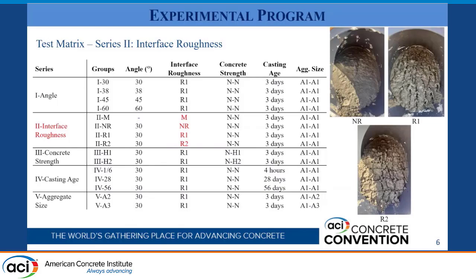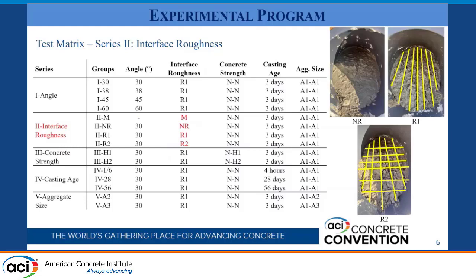For the second series, we investigate different levels of interface roughness. For group M, specimens are cast monolithically with no cold joint. For group NR, there is no intentional roughening on the cold joint interface. For groups R1 and R2, they are roughened — R1 uses unidirectional stripes and R2 uses an even more roughened grid-like pattern. These stripes are spaced at 0.5 inches and have a depth of 0.125 inches.